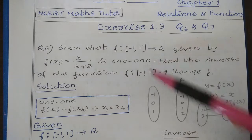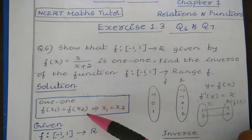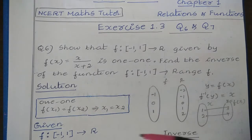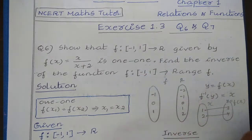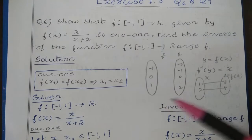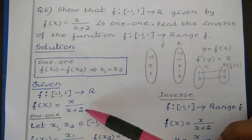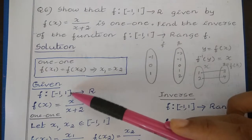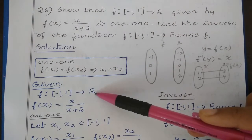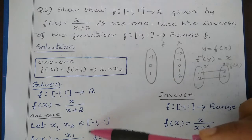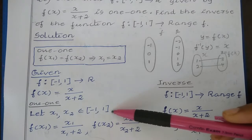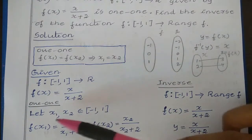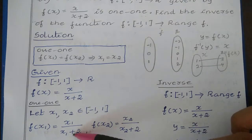To show any function as 1-1, we have to first take f of x1 is equal to f of x2. Then if we get x1 is equal to x2, we can say that the function is 1-1. So let us try to show that. First, take any two numbers from the domain. For this function f of x, the domain is minus 1 comma 1 and the co-domain is real numbers. So let x1 and x2 belong to the domain, that is x1, x2 belongs to minus 1 comma 1.